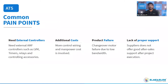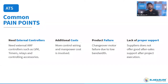Common pain points with competitor products include the need for external controls like an external AMF controller, LVM relay, timers, and control accessories, resulting in additional cost. More control wiring and higher manpower costs are also involved. Product failure is very common. In motorized ATS the heart of the product is the motor inside the changeover mechanism, and we designed our motor to withstand from 140V AC up to 275V AC, important for remote and rural areas with voltage fluctuation.